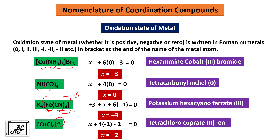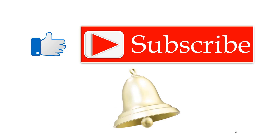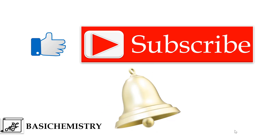This is how all coordination compounds are named according to the IUPAC nomenclature system. For practicing nomenclature of coordination compounds, I am giving a link to my friend Dr. Amul Pawar's video on this topic. Please watch it, and if you have any difficulties, mention them in the comment box — I will definitely answer your questions. If you like my video, click like, share, and subscribe to my channel. Hit the bell icon to get notifications of my new videos. Keep watching Basic Chemistry. Thank you.